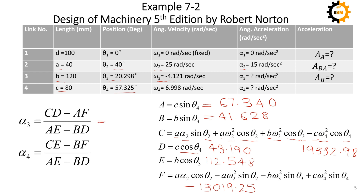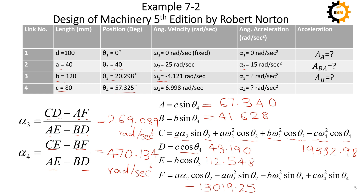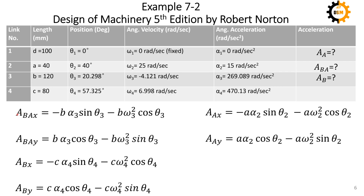Based on these values, substituting A, C, D, F, E, and B into the equation, alpha 3 comes out to be 269.089 radians per second squared. Similarly, using C, E, B, F, A, E, and B, D, alpha 4 comes out to be 470.134 radians per second squared.